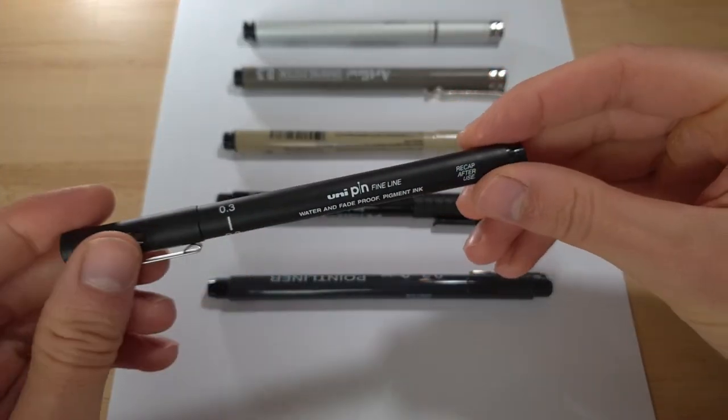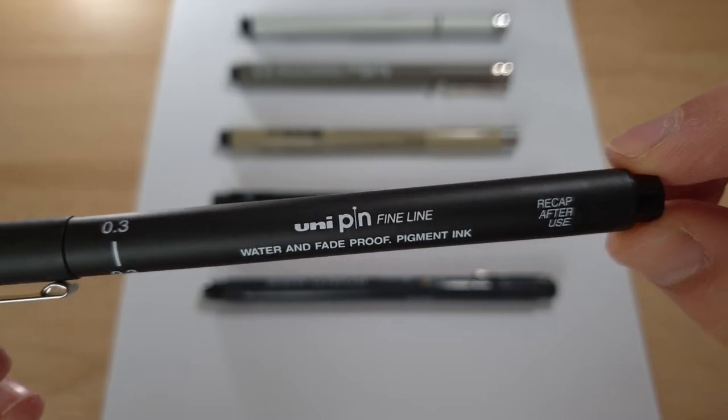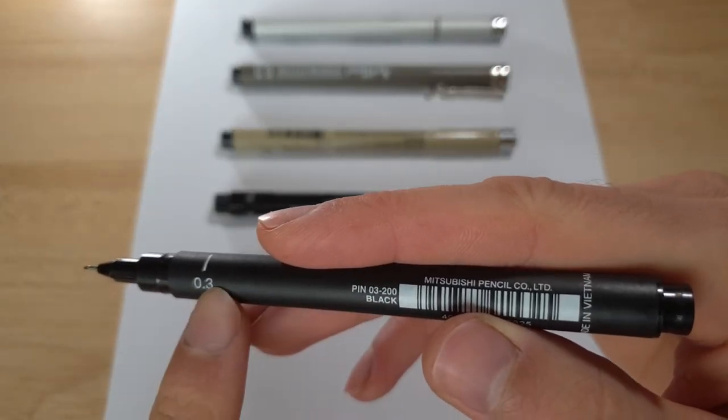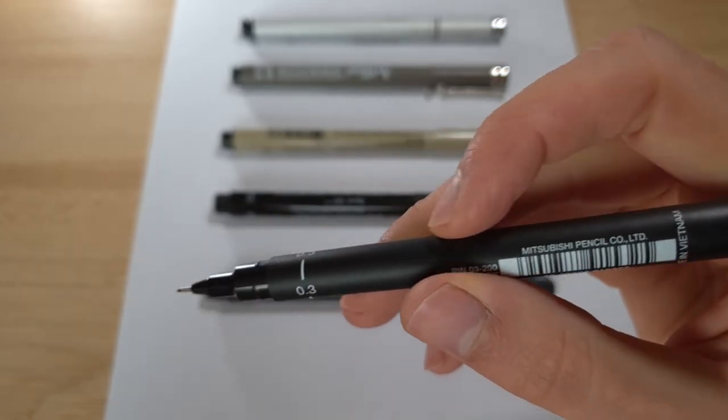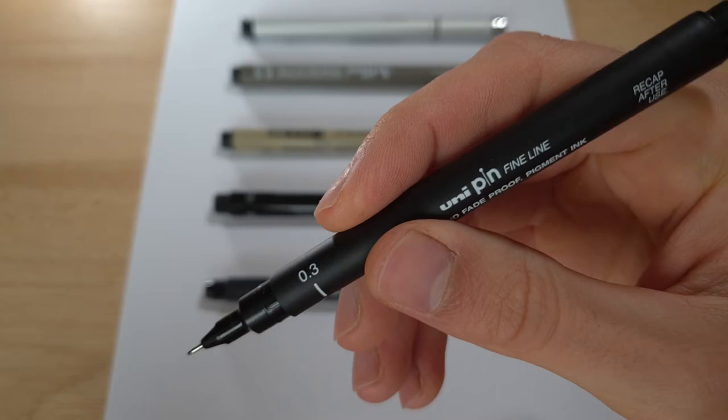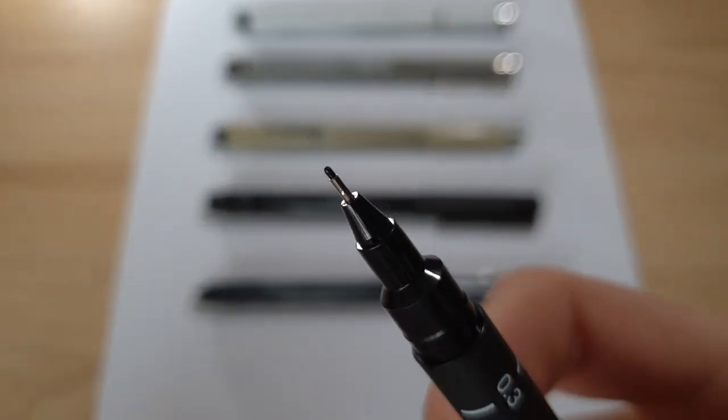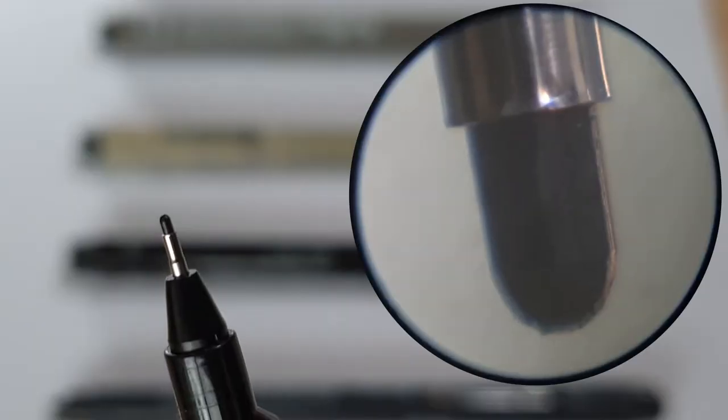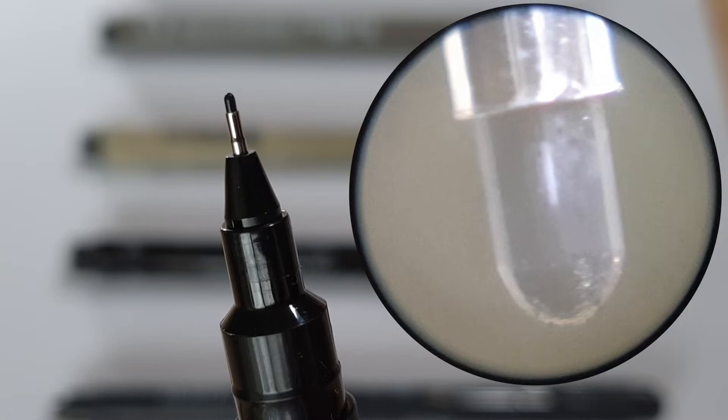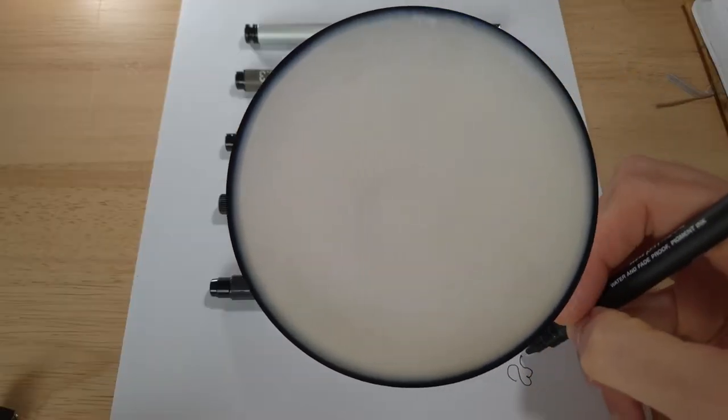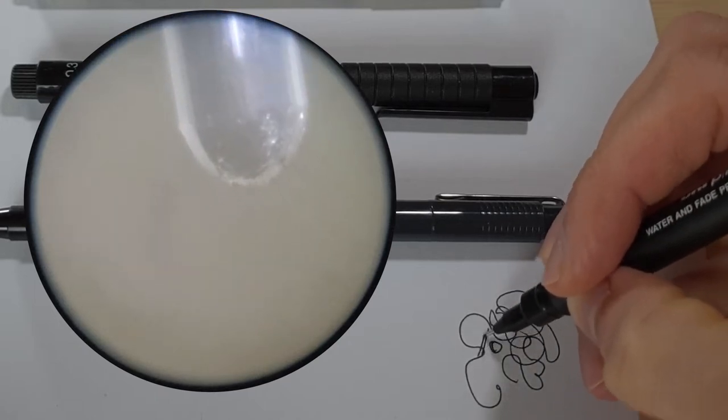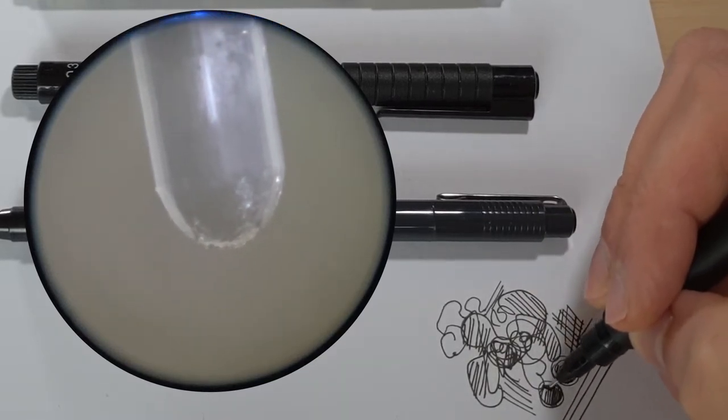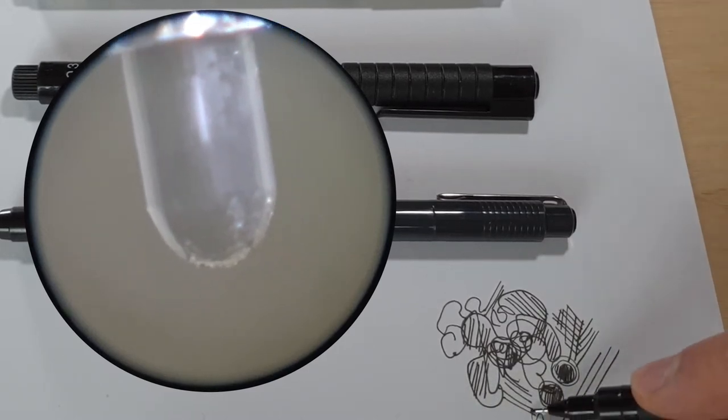So let's start reviewing the UniPin Fineline Water and Fade Proof Pigment Ink. The grip of this pen is kind of average, the plastic has a slight matte finish to it, which I find offers less grip than a smooth plastic, believe it or not, but it's still an acceptable amount. So besides how it feels, the rest of the importance comes from the quality of the tip. And I did look at each tip from each pen under a microscope. The tip on the UniPin Fineline was a nice smooth rounded tip with virtually no imperfections at all, and it performs very well. It's a pretty smooth line. The tip feels pretty hard and long lasting.